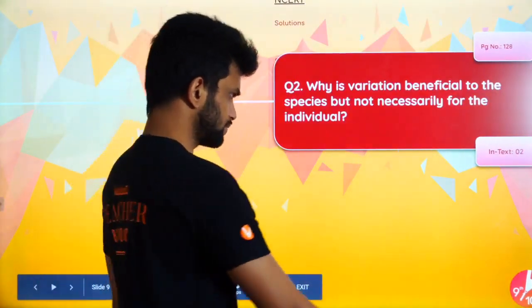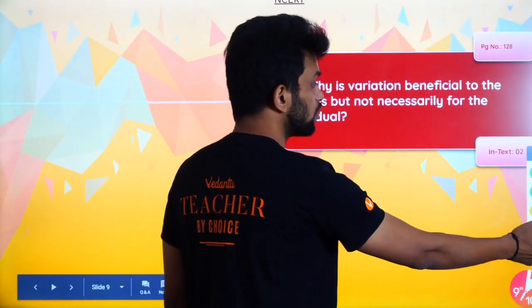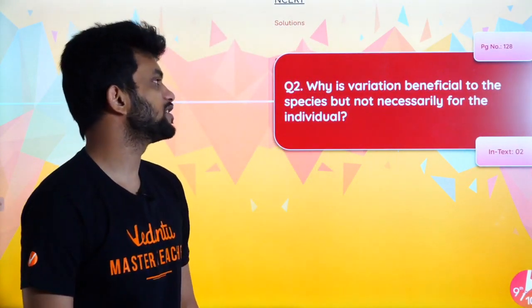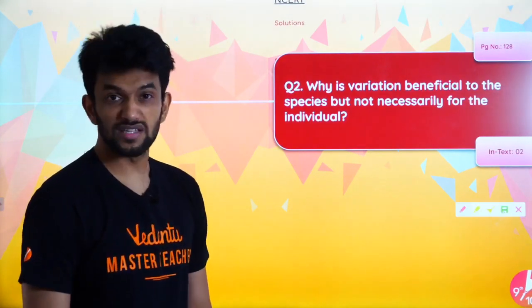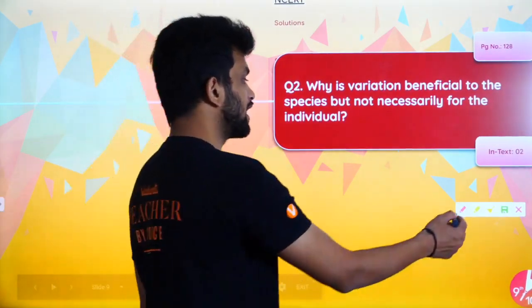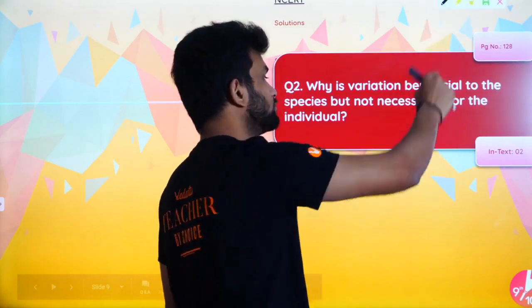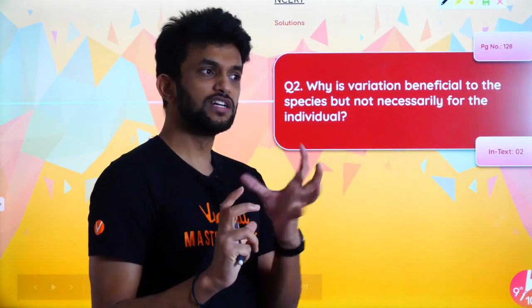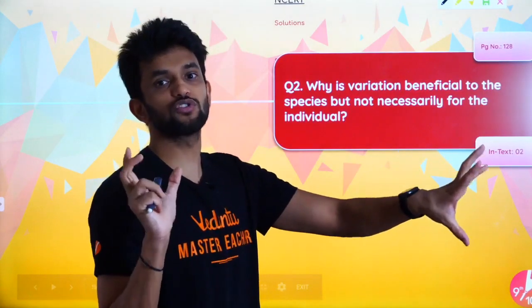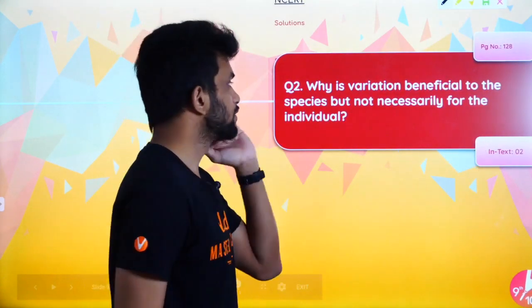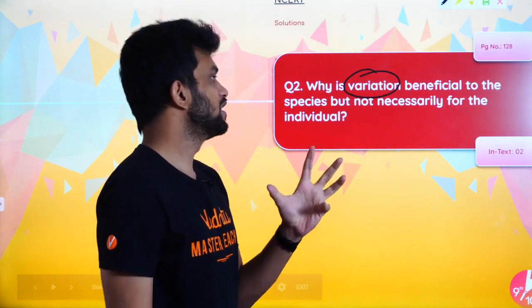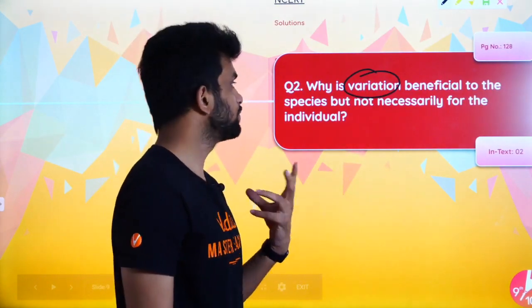Next question — this is a little complicated concept, try to understand it. The question says: 'Why is variation beneficial to the species but not necessarily for the individual?' Now, this is saying that variation helps the species but not necessarily the individual.